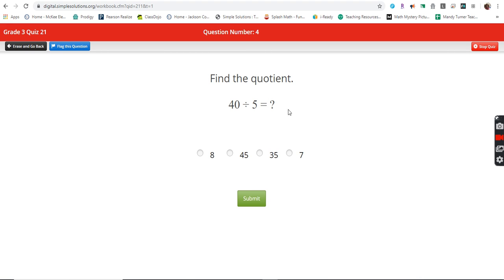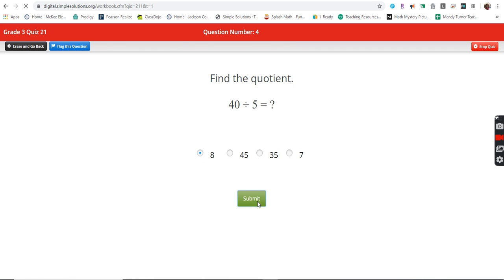Okay, 40 divided by five. What times five is 40? Eight times five is 40. Trina must spend at least 20 minutes reading each evening. If she starts reading at 8:35, what is the earliest time she can finish? 35 plus 20 is 55. 8:55.